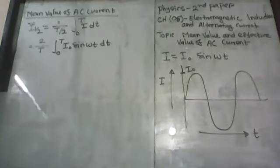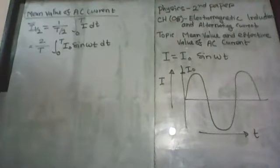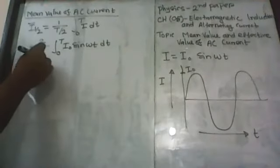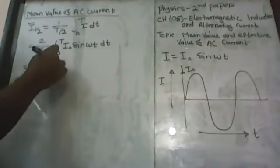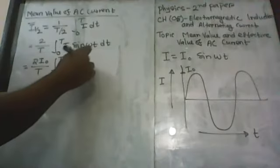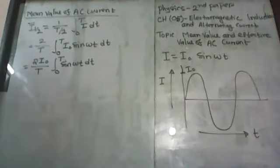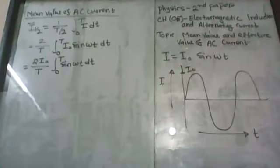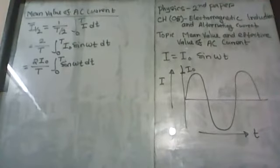Since I₀ is a constant function, it comes out from the limit of integration. So we get 2I₀ divided by T, and then integration takes place over sin(ωt) dt. You know that if you integrate sin(θ), the outcome is −cos(θ). And if you integrate sin(mθ) dθ, the outcome equals −(1/m)cos(mθ). I'm going to use this formula.